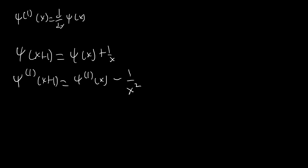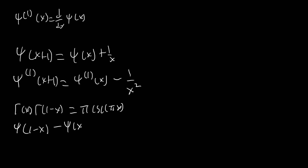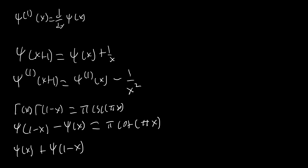Let's also use our reflection formula. We know that gamma(x) times gamma(1−x) equals π·csc(πx). If you take the natural log of this and differentiate, you'll find that digamma(1−x) minus digamma(x) equals π·cot(πx). And if we differentiate this again, we're going to find that trigamma(x) plus trigamma(1−x) equals π²·csc²(πx). So this identity is going to be very useful to us as well.